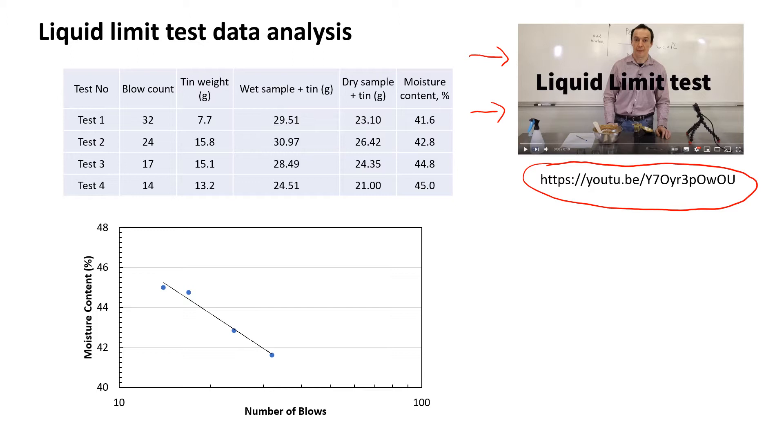I have here a table and in this table you will see that we have four different tests. That's what we did in the video. Ideally we would like to have at least five tests or even more to get more reliable results, but I did only four tests. For each test we counted number of blows. Our first test was 32, second test was 24 blows, and then we took soil for water content test.